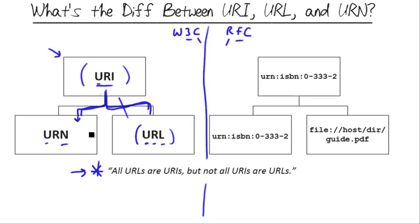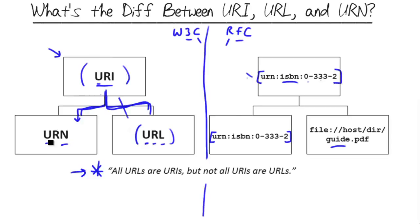Let me put this in a practical example context, and hopefully it'll become crystal clear. Let's look at the subject of book publishing. Books in the United States are assigned a globally unique value — an ISBN number. So let's say we have this book called Guide, and its globally unique identifier, its ISBN, is 03332. We could represent this name in a standard way. This can serve in two contexts: we can refer to this globally unique name as either a URI in its most general form, or a URN, which has some rules associated with it.